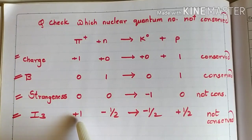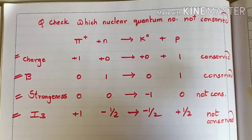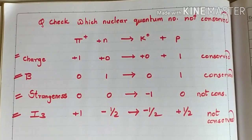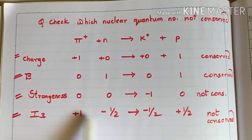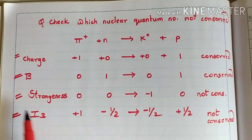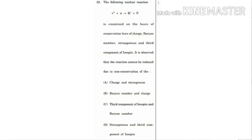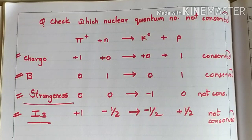Checking I3: on the right-hand side, I3 is plus one and minus half for K-naught and proton, giving plus half total. On the left-hand side, I3 for pi positive is plus one and for neutron is minus half, giving plus half. Wait — the analysis shows I3 is not conserved between LHS and RHS. Thus this reaction is not conserved under strangeness and I3 — corresponding to option D. This nuclear reaction is invalid under the laws of conservation of strangeness and third component of isospin I3.